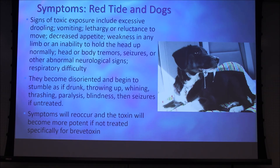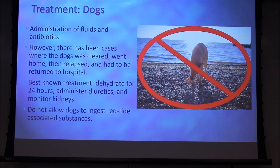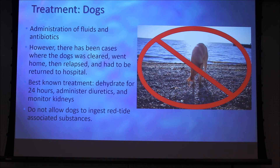Additional signs include respiratory difficulty. Pets become disoriented and begin to stumble as if drunk, throwing up, whining, thrashing, paralysis, blindness, and then seizures if untreated. Symptoms will reoccur and the toxin becomes more potent if not treated specifically for brevetoxin. Veterinarians using fluid and IV treatments would see dogs appear better, test normal, go home, and then within 10 hours be sick again — blind, seizing, and needing to return. It wasn't until 2003 that brevetoxin was found in their bloodstreams, and veterinarians discovered they had been mistreating hundreds of pets.